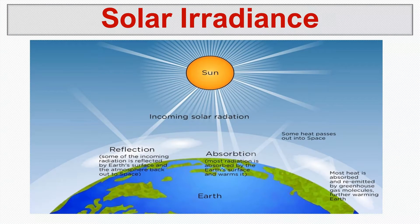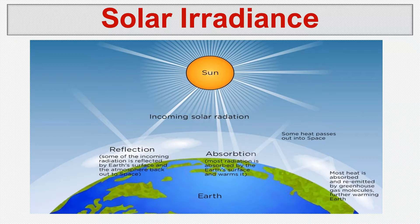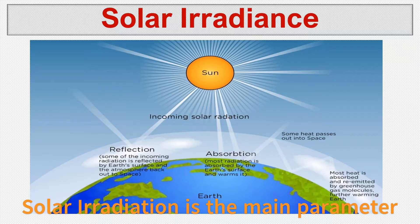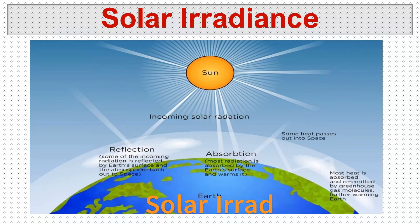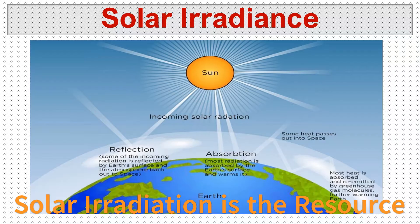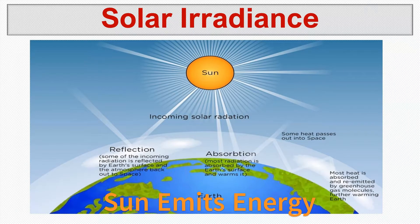Hello everyone, today we are going to discuss solar radiance. The amount of electricity produced by a solar panel is almost fully dependent on the amount of solar radiance, so solar radiance is the main parameter — the main measure to know how much the panel can produce. Solar radiation is the resource to generate electricity using solar panels, and solar radiance measures how much energy the sun emits that actually reaches the earth or the solar panels.